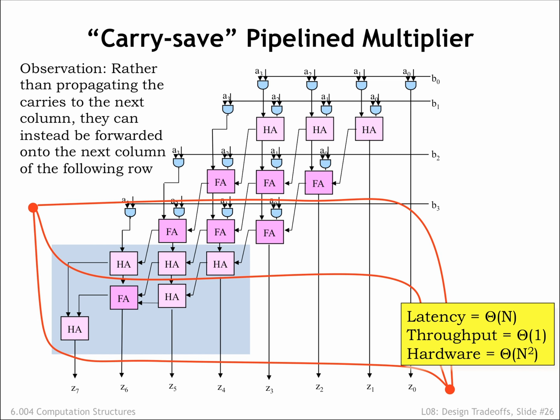With order N contours, there are order N pipeline stages, so the system latency is order N. The hardware cost is still order N squared. So the pipelined carry-save multiplier has dramatically better throughput than the original circuit, another design trade-off we can remember for future use.